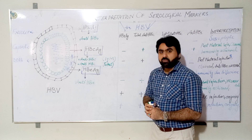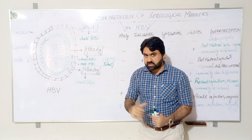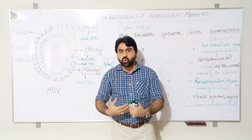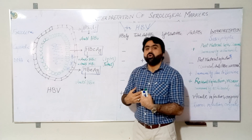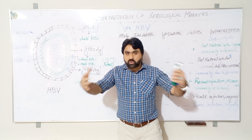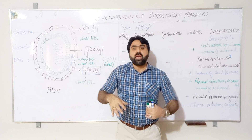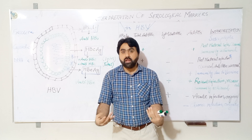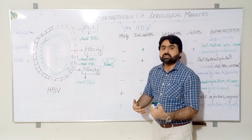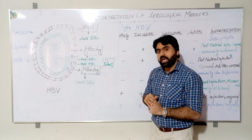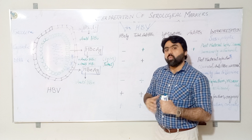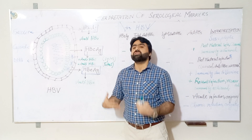The third antigen is HBeAg. HBeAg is not part of the structure of hepatitis B virus but is produced during replication of the virus inside the host cell. It is known as an immune modulating protein because HBeAg is secreted into the cell and outer environment, modulating the host immune system to create a conducive environment for HBV survival. Antibodies against HBeAg are known as anti-HBe.